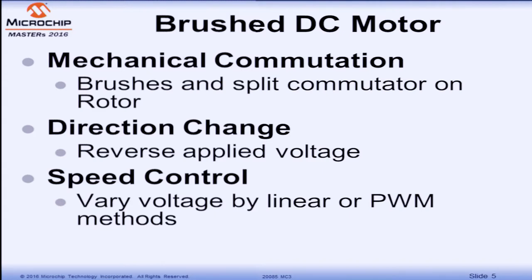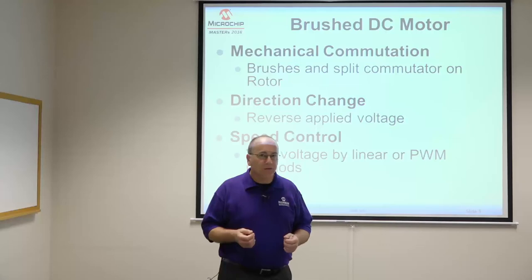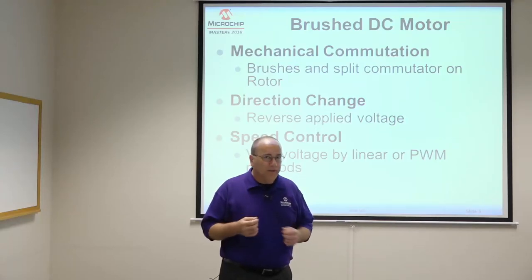In a brushed motor, commutation is done with brushes and with split rotor, which means that the electronics used can be very simple. Applying a DC voltage to the motor will allow it to spin. You reverse the voltage on the motor terminals and the motor runs in the opposite direction. If you vary the voltage across those terminals, the motor will spin at different speeds.